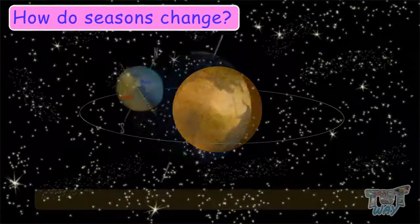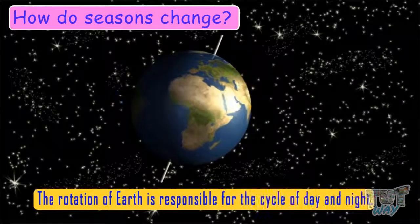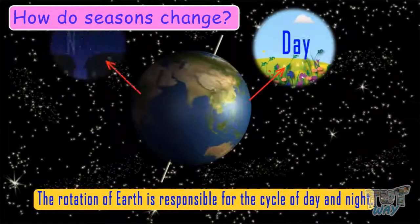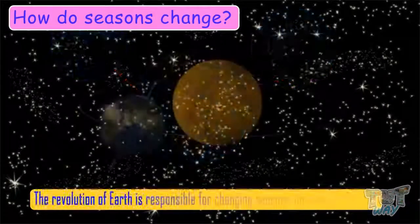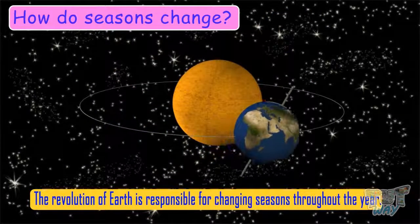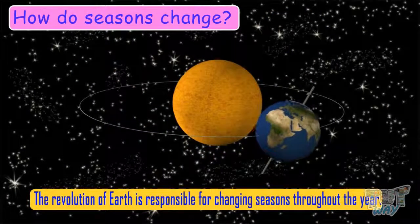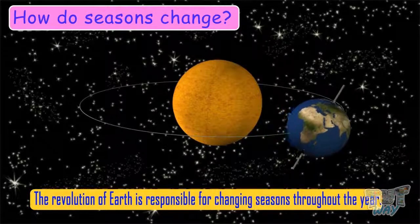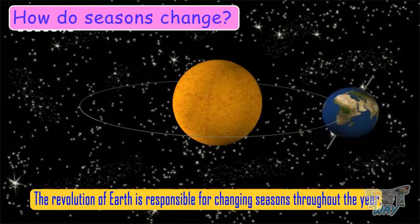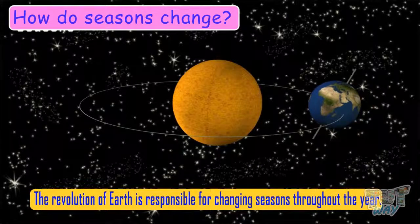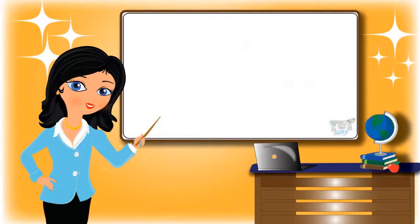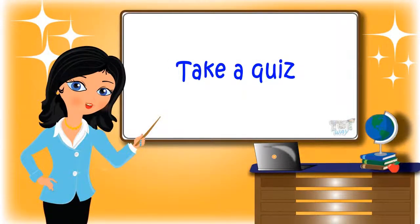So kids, we learnt that rotation of the Earth is responsible for changing days and nights. Revolution of Earth is responsible for changing seasons all through the year. Today we learnt about various cycles we experience in our daily lives. Now you may go ahead and take a quiz to learn more. Bye-bye!